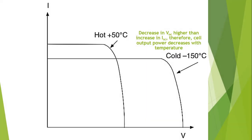This is the temperature relative curve for summer at 50 degrees centigrade, and the other one is for a colder climate at minus 150 degrees centigrade. We can see from these curves that the decrease in VOC, open circuit voltage, is higher as compared to the increase in short circuit current. Therefore, the output power will decrease with respect to temperature.